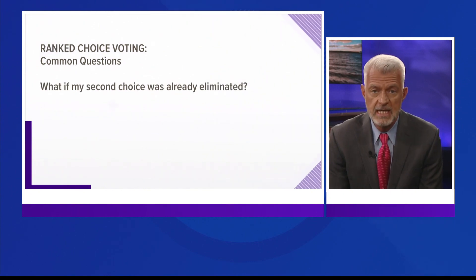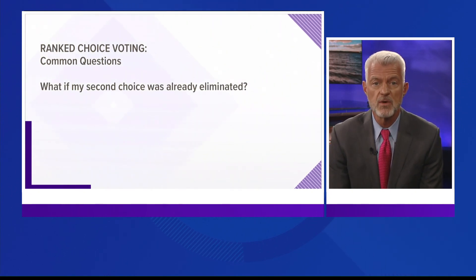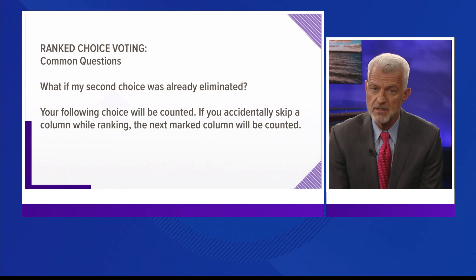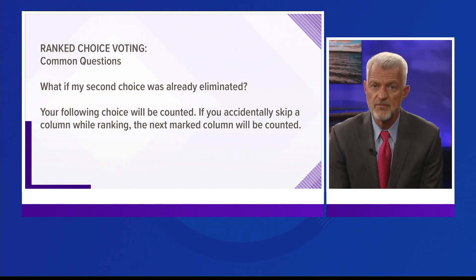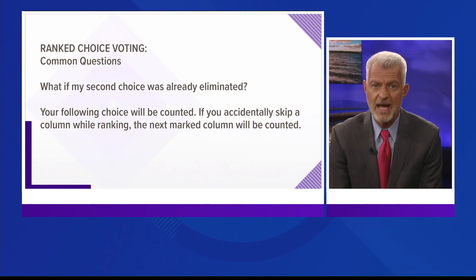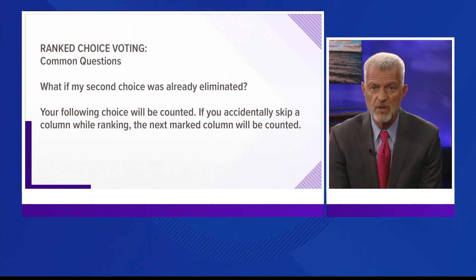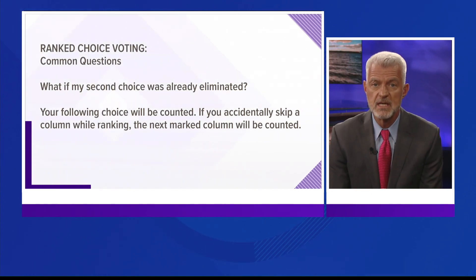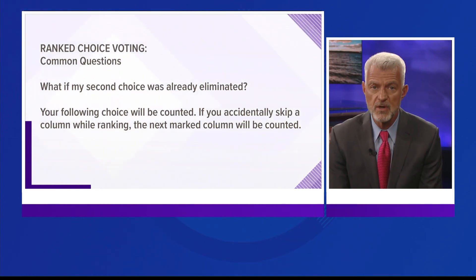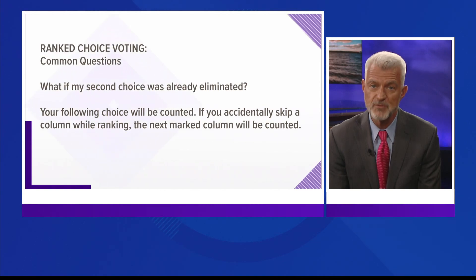Either way, it's okay. Second question: what if my second choice was already eliminated? Well, if a new round starts and your next preferred choice was eliminated, then your following choice is counted in the race. This also applies if you accidentally skip a column when you vote. If no second choice was given but a third was, then your third choice will be considered your second choice. That's called skipped ranking.